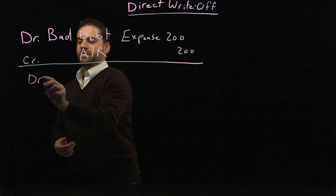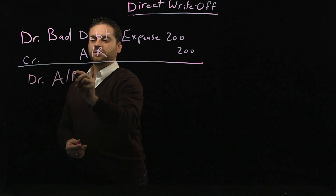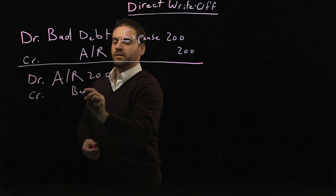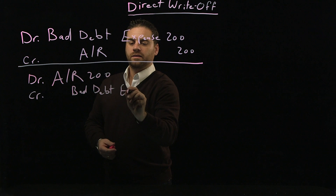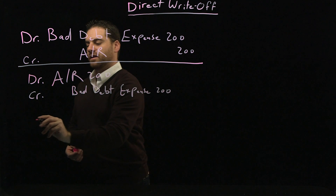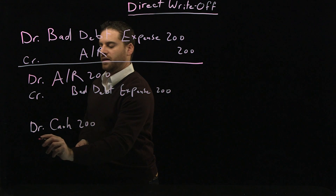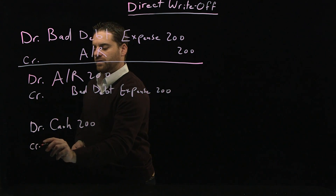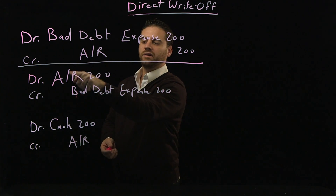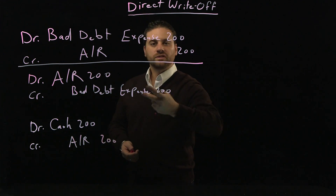To reverse, debit accounts receivable $200 and credit bad debt expense for $200. Then for the second journal entry — the collection of cash — debit cash $200 and credit accounts receivable $200. That amount went back to accounts receivable, and now it's being converted to cash.